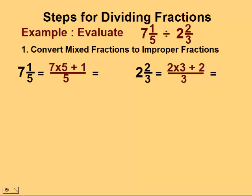So for 7 1/5, we multiply 7 to 5, and add 1, and put it over 5. For 2 2/3, we take the whole number 2, multiply it to the denominator 3, and add it to the numerator 2. And we put this over 3. So our improper fractions for this question are 36/5 and 8/3.